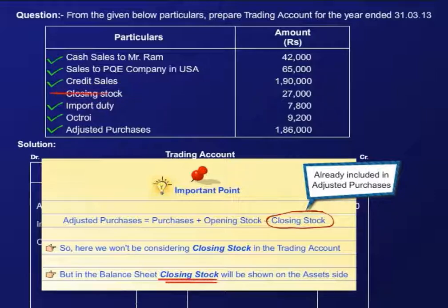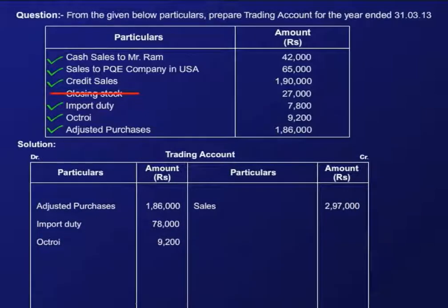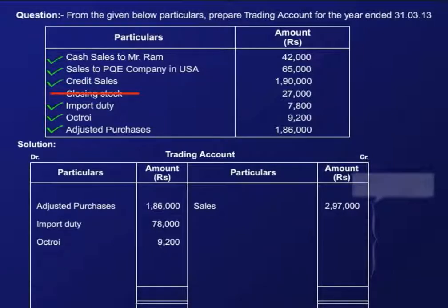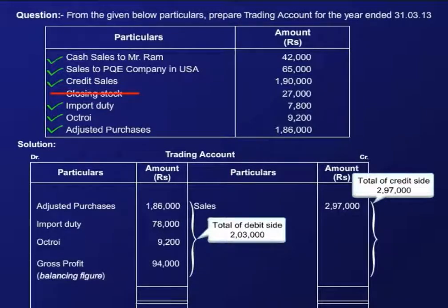However, you should note that when we prepare the balance sheet, the closing stock will be shown on the asset side. But for now, let's get back to the trading account and close this account. Clearly, the credit side is greater than the debit side, so the difference amount is regarded as gross profit and is shown here like this.